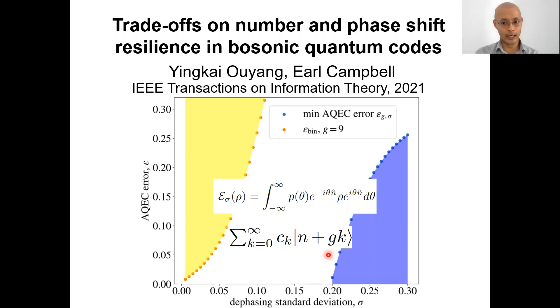Now the type of errors that we are interested in are these Gaussian dephasing errors. These Gaussian dephasing errors are quite severe. Let's consider a Gaussian dephasing error that adds a phase error with a standard deviation of sigma and a mean of zero. Can we correct these errors using approximate error correction codes?